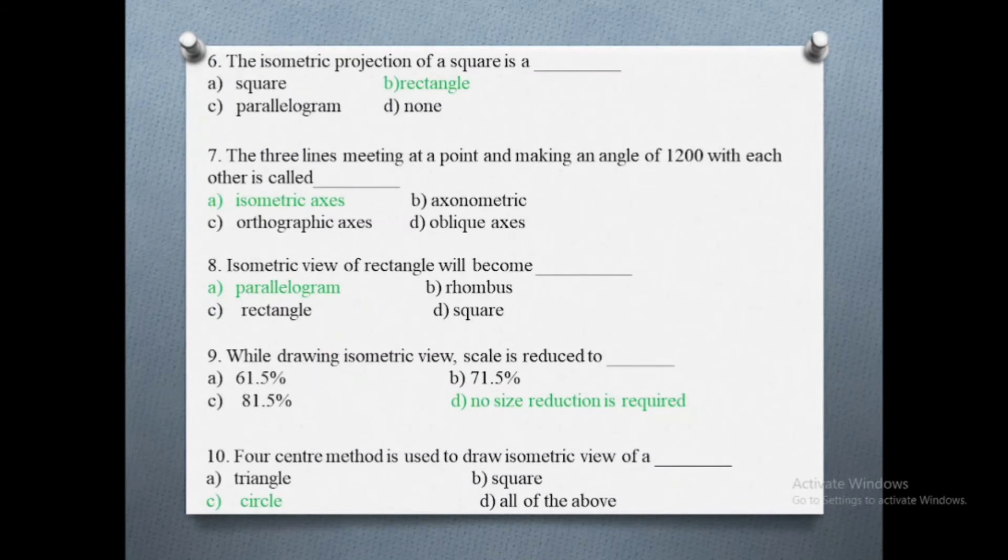Eighth question: isometric view of rectangle will become. Options are: a) parallelogram, b) rhombus, c) rectangle, d) square. The correct answer is parallelogram.